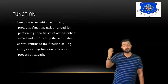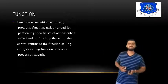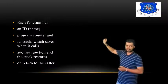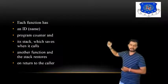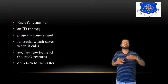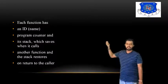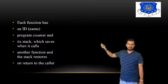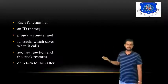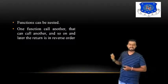Each function has its own ID, a specific ID number, and a program counter for executing the task. The program counter is used to continuously count the execution of a task. There is a stack which saves when it calls another function — the stack stores the return to the caller.